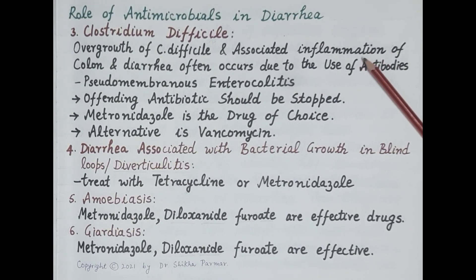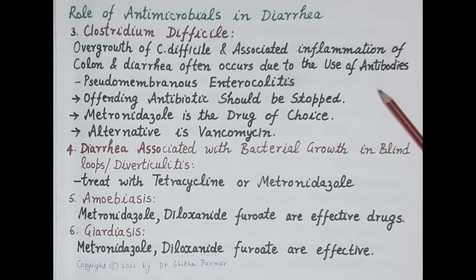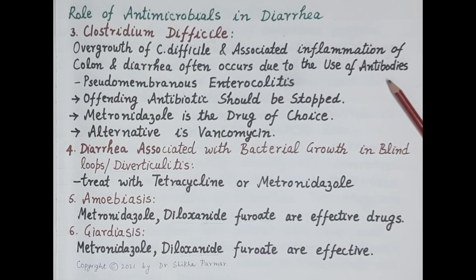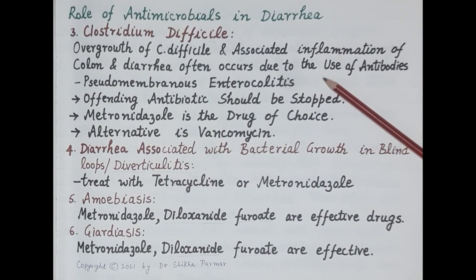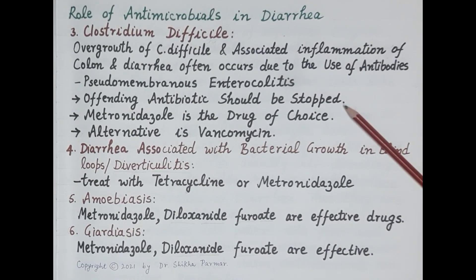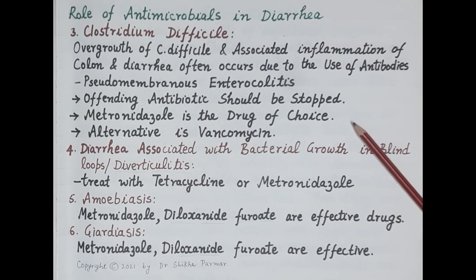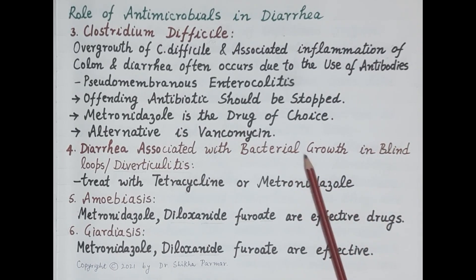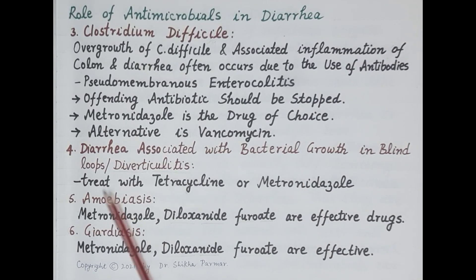Diarrhea caused by overgrowth of Clostridium difficile — overgrowth of C. difficile and associated inflammation of the colon often occurs due to the use of antibiotics, causing pseudomembranous enterocolitis, which is inflammation of the large intestine. The offending antibiotics should be stopped, metronidazole is the drug of choice, and vancomycin is the alternative drug.